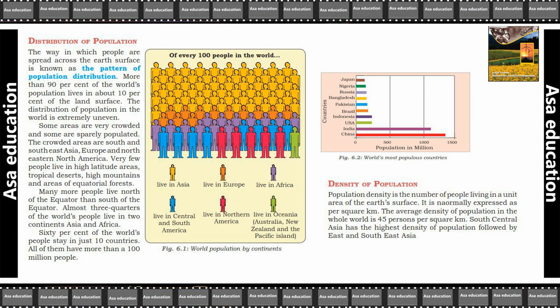The crowded areas are South and South East Asia, Europe and North Eastern North America. Very few people live in high latitude areas, tropical deserts, high mountains and areas of equatorial forests.